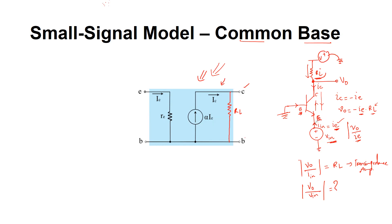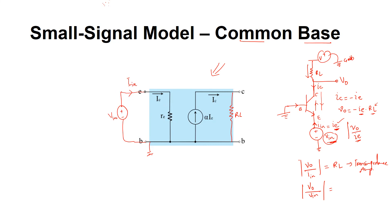To the emitter pin, we connect the input voltage source v_in, with the other end of v_in connected to ground. We draw that input voltage source here — the base is connected to ground — so this is your v_in. The input current flowing due to the applied v_in is i_in, which equals i_e. That current flows through resistance r_e, which is v_BE divided by i_e — the emitter-to-base junction resistance — creating a voltage drop. So v_e equals v_in.